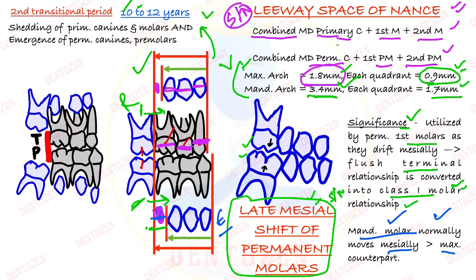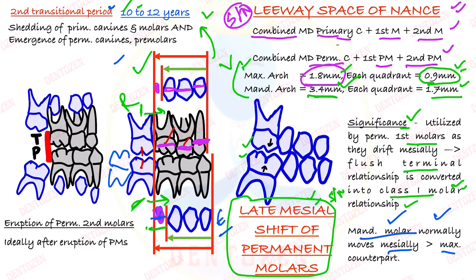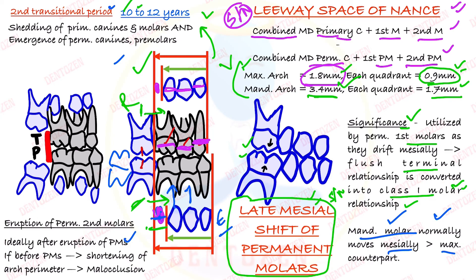The second thing happening in the second transitional period is the eruption of permanent second molars coming from behind. Ideally they should come after the eruption of premolars, because if they come before, that will lead to shortening of the arch perimeter and development of malocclusion.